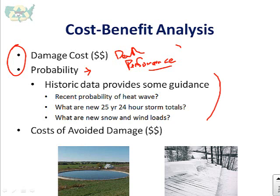We can use historic data to provide some guidance. Looking at the recent probability of heat waves — as we saw in the last lesson, somewhere in the middle of Nebraska you have a one-in-four chance of having a significant heat wave in any given year. We can look at 25-year, 24-hour storms, thinking about precipitation intensities and preparing for floods. These storm events have been changing over the last several years, and looking at those new probabilities might help guide our decisions in how we plan and adapt to this changing climate.